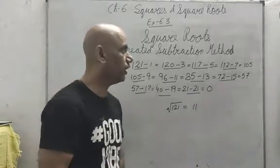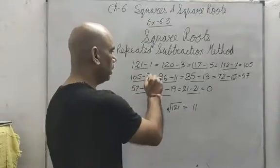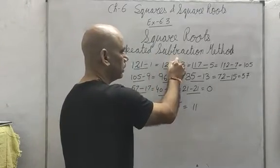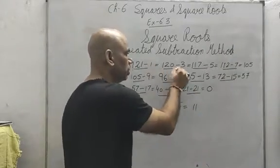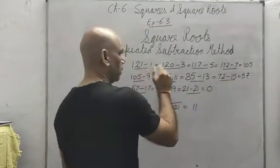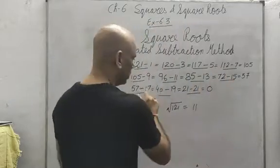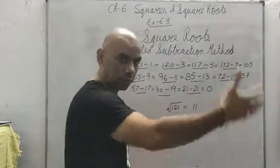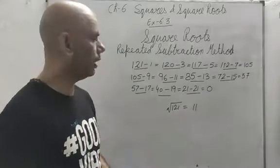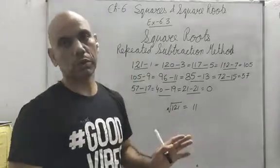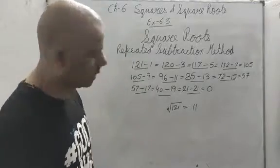So what is the method? You repeatedly subtract consecutive odd numbers — 1, 3, 5, 7, 9, 11, 13, 15, 17, 19, 21 and so on — and the number of times you subtract is the square root. This was the repeated subtraction method.